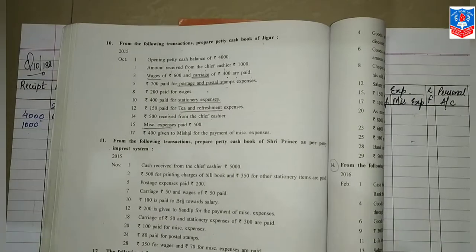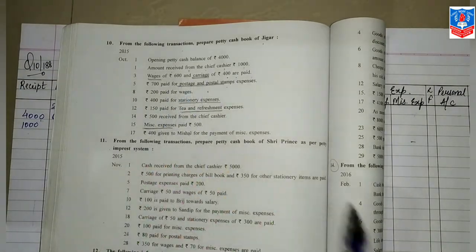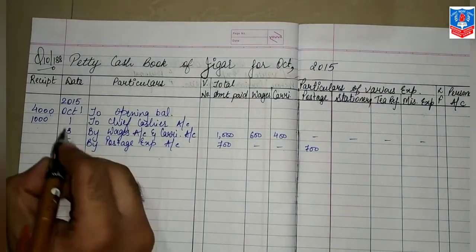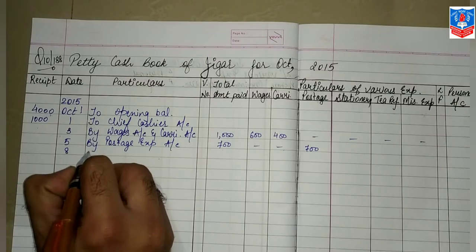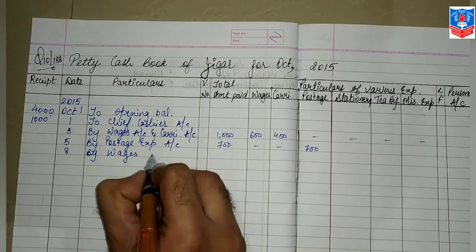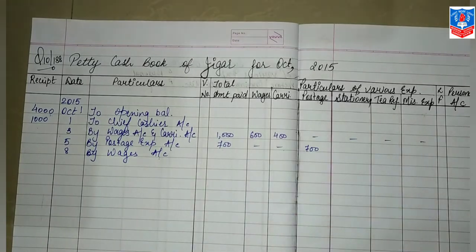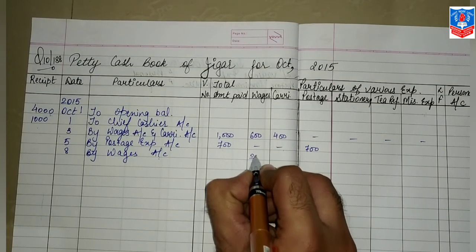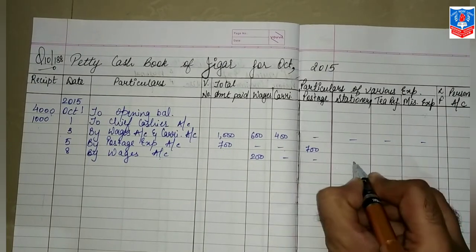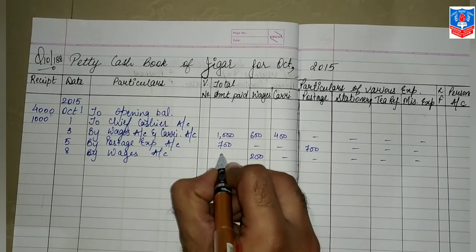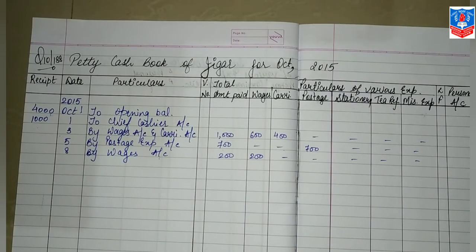Back to the question. Transaction dated 8: 200 paid for wages. For wages you are paying — again it is a payment, so 'By.' Date 8. Particulars: 'By Wages Account.' How much was paid? 200. So in the column of wages — 200. In the receipt side — nil, nothing is written. In the column of total — 200.